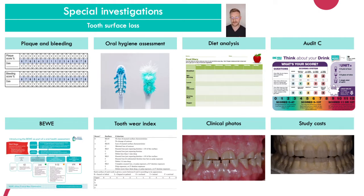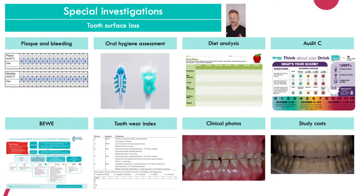The Basic Erosive Wear Examination (BEWE) is more specific to tooth wear — it's essentially like a BPE for erosion. You split the mouth into sextants, score the teeth based on the level of erosion, add up the scores, and that guides your management and treatment planning. The downside is it only looks at erosion. The Smith & Knight Tooth Wear Index is a more comprehensive analysis of tooth wear — you don't need to know it inside out, just be aware of it and what it measures.